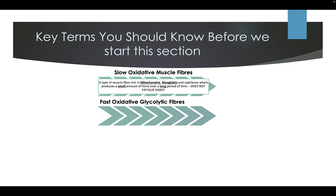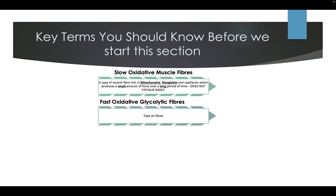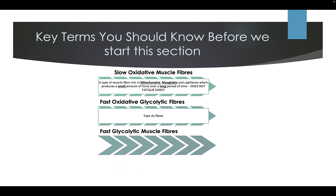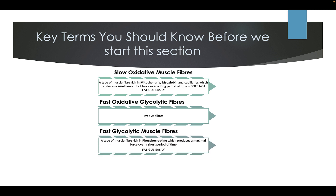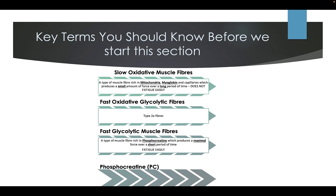Fast oxidative glycolytic fibres, also known as Type 2A fibres. Fast glycolytic muscle fibres: a type of muscle fibre rich in phosphocreatine, which produces a maximum force over a short period of time and fatigues easily.